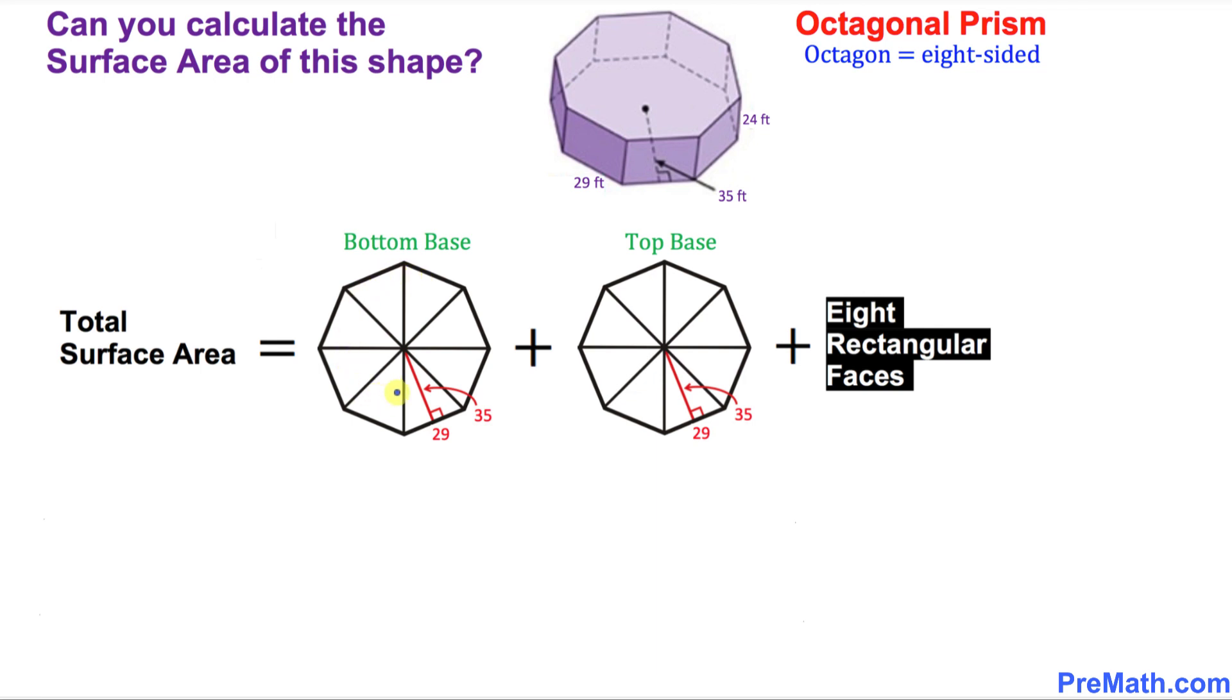You look at this one. This octagon has eight similar triangles, the same kind of triangles. So let's go ahead and calculate the area of each individual triangle of this octagon.